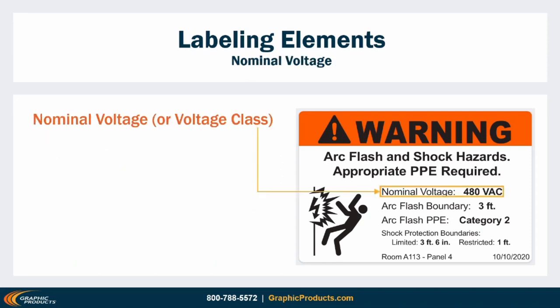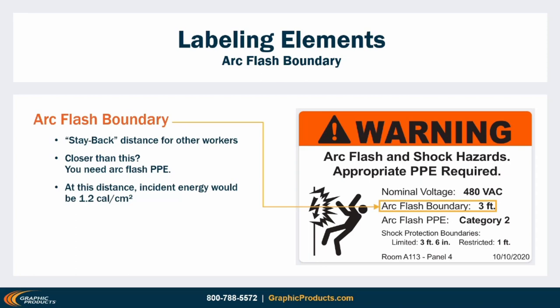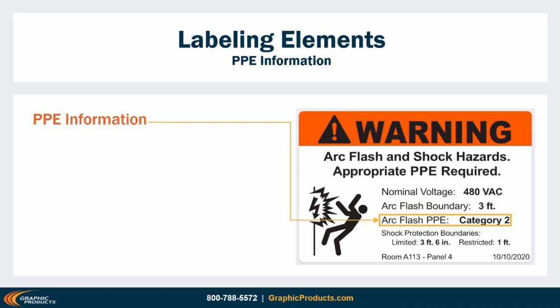First, there's the nominal system voltage — the voltage class for the equipment. This is usually the easiest detail to track down and serves as a quick indicator for the power of a system. Next, there's the arc flash boundary — the stay-back distance, how far away other workers should stay when work is being done on the equipment. Anyone who gets closer needs PPE to protect them from the blast of heat from a potential arc flash. This boundary is defined as the distance where incident energy from an arc flash would be 1.2 cal/cm², representing when unprotected people are likely to get second-degree burns. Crossing this boundary triggers the requirement for PPE to protect against burns.